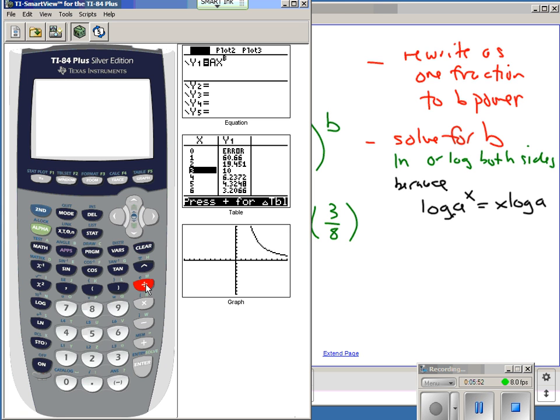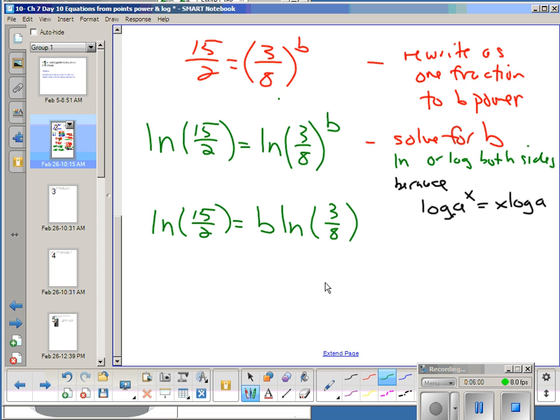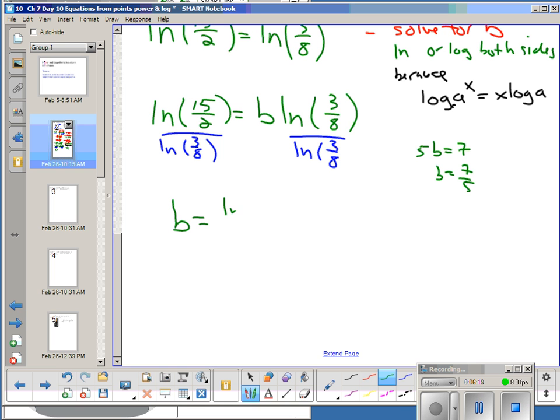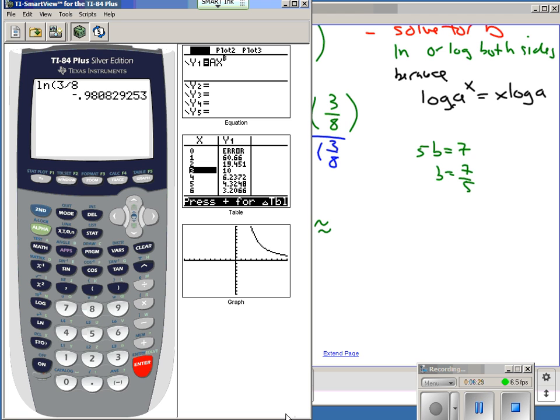So I have Ln of 3 8. If I do this, if I take the Ln of 3 divided by 8, that's just a number. So if I gave you a problem and I said 5B equals 7, how do you get B divided by 5? Same thing here now. This is just a number. So I'm going to divide both sides by Ln of 3 8. And so B is equal to Ln of 15 halves divided by Ln of 3 8. And I can get a decimal approximation for this in my calculator.